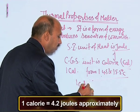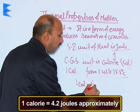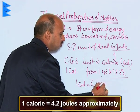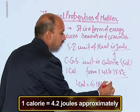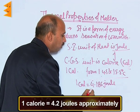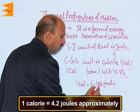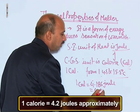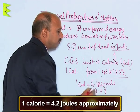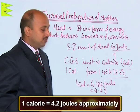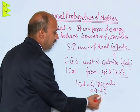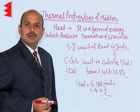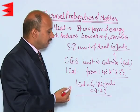One calorie is equal to 4.186 joule, or in round figures, 4.2 joule. This is the relation between calorie and joule.